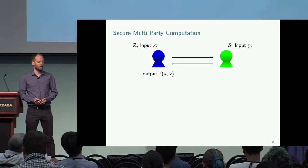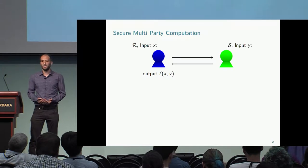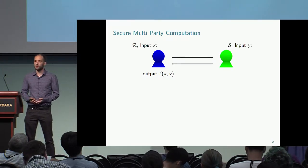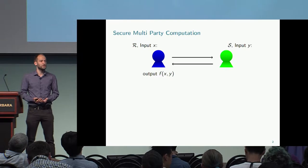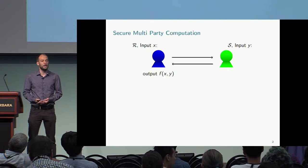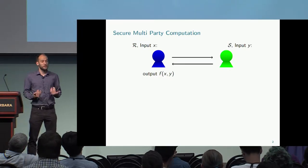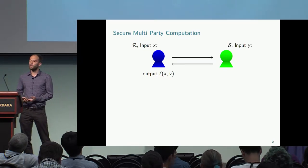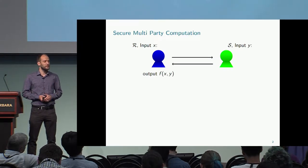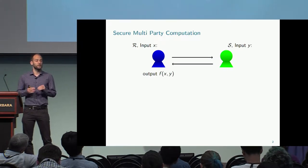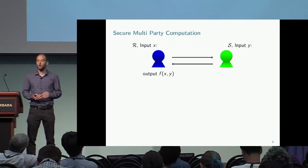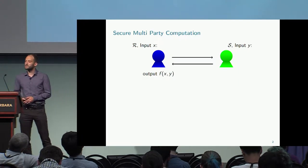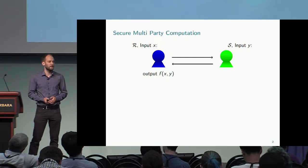At the end of the protocol, party R wants to receive the output — the evaluation of the functionality on inputs X and Y. In this talk, I particularly want to focus on a special round complexity of just two messages: one message sent by the receiver and a second message sent by the sender.